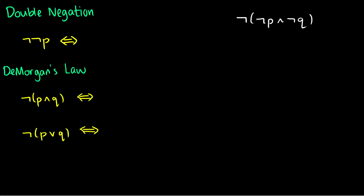The double negation law says that NOT NOT p is just the same thing as p. If p is true then NOT p is false, which means NOT NOT p must be true. If you reverse the values twice, it's like not reversing it at all.